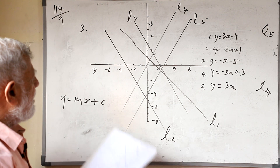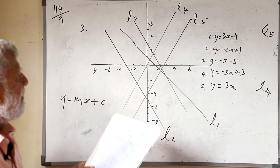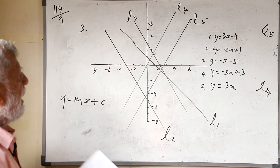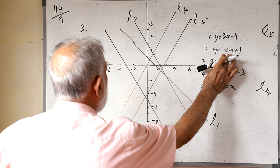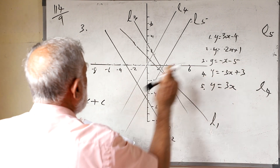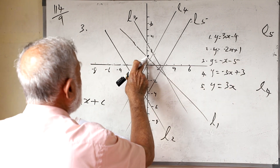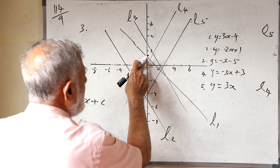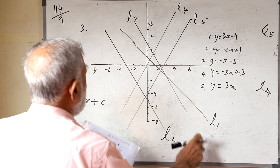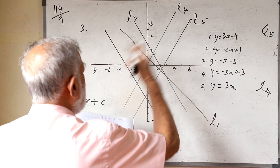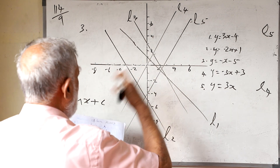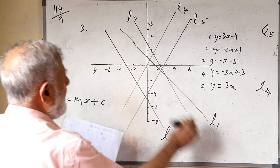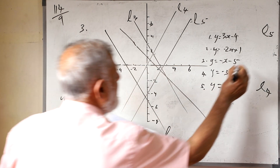Just look at the place where it cuts the y-axis. The second one is cut at the y-axis at 1. The only line cut at the y-axis at 1 is this line, so that is equal to L1. The gradient is negative, making an obtuse angle with the x-axis, so it is L1.